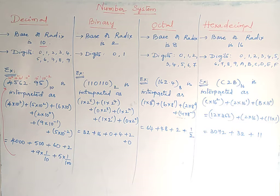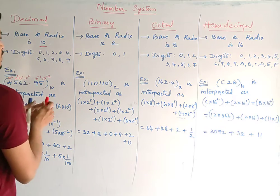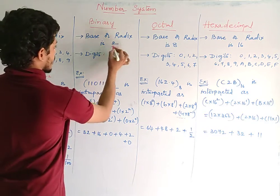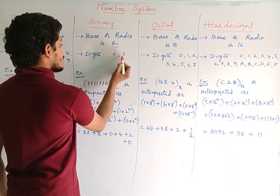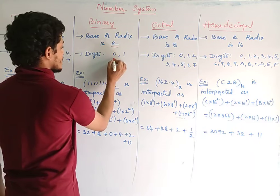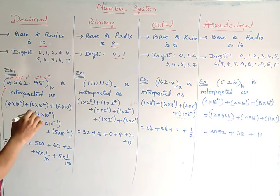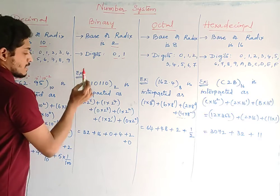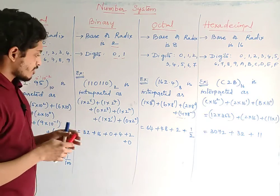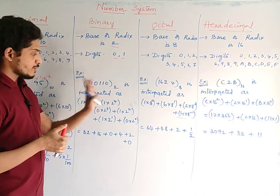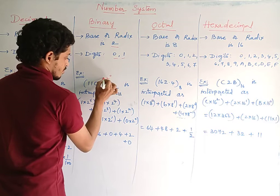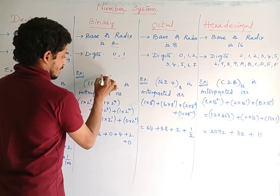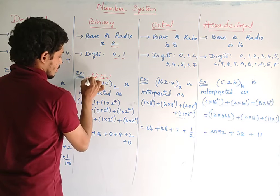Now let us see what exactly a binary number system is. The binary base is 2 — by 'bi' we mean 2. The radix or base is 2, so we have 2 digits: 0 and 1. Suppose 110110 to the base 2. The place values are 2 power 0, 2 power 1, 2 power 2, 2 cube, 2 power 4, 2 power 5.